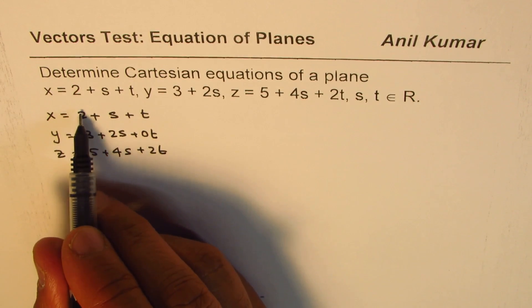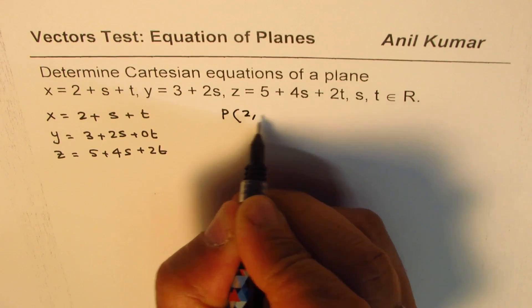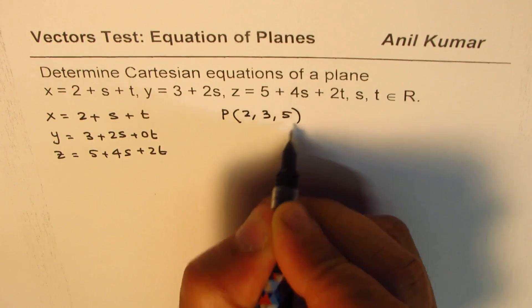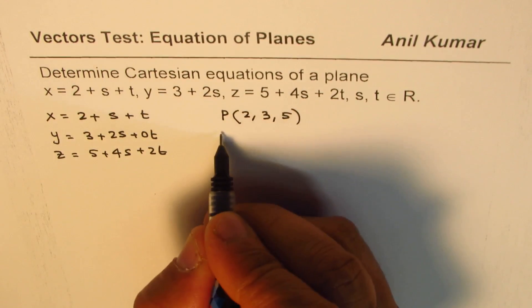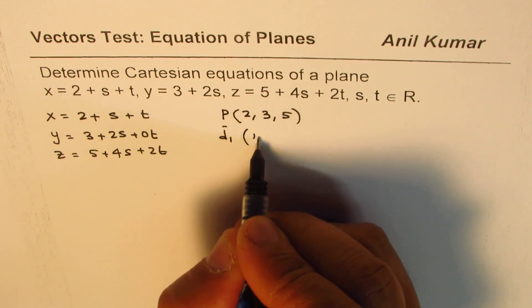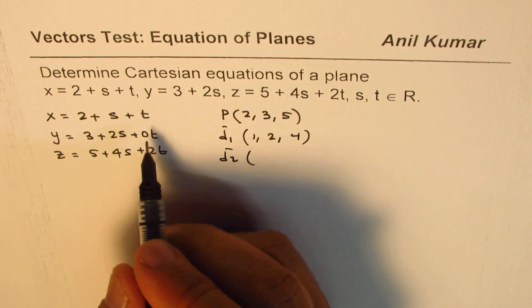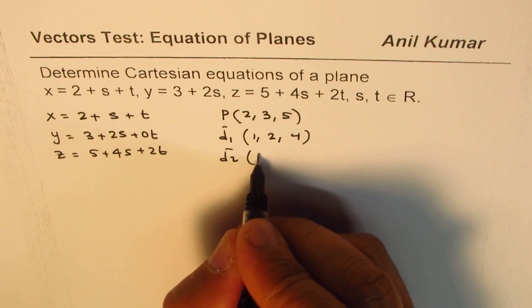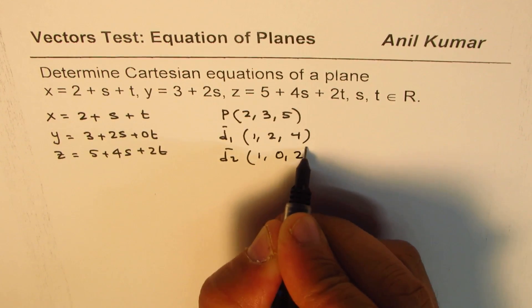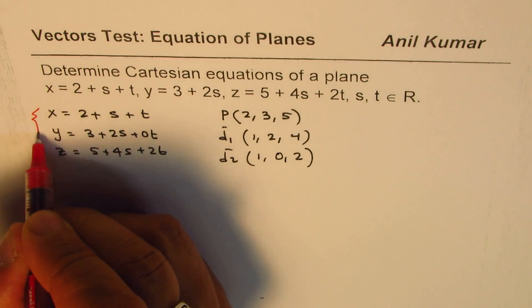From this information, what do you get? You get a point P which is (2, 3, 5), one direction vector d1 which is (1, 2, 4), and another direction vector d2 which is (1, 0, 2). All this information comes from the parametric set of equations.